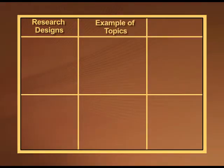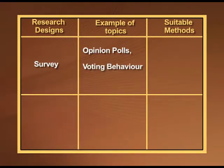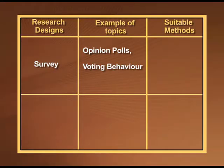Look at this table. It presents research designs, examples of topics you can study, and suitable methods to study those topics. For survey as a research design, possible topics include opinion polls or voting behaviour. You can conduct a survey on a large number of people asking whom they vote for, how many times they have voted, and whether they vote for a policy or a person. The suitable method for such topics is structured interviews or questionnaires, which allow you to interview a large sample quickly and over a long period of time.